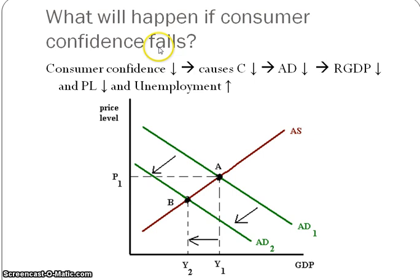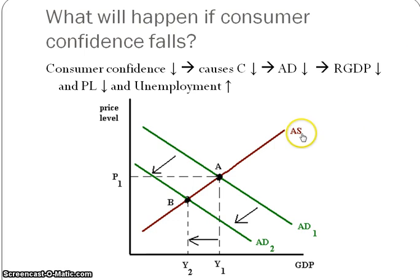When you have consumer confidence — meaning that people don't feel like they'll be able to afford things in the future or don't believe in the way things are going — their consumption is going to decrease. When that happens, you have a decrease in aggregate demand, which decreases real GDP, marked with a Y, and that also decreases the price. The aggregate supply curve, for now, is upward sloping. The other thing to look at is unemployment, because the two things we really look at are inflation and unemployment — what we can do to try to solve problems with fiscal and monetary policy. When less goods are produced, more people become unemployed.